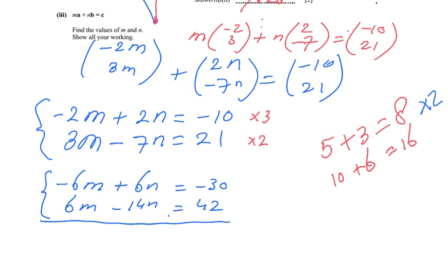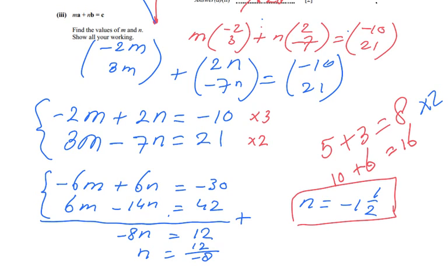Careful now. Do I have to plus or minus it? I have to plus it, because -6M + 6M is going to be zero. Always be careful there. So 6N + (-14N) is going to be -8N, and that equals -30 + 42, which is 12. So N equals 12 divided by -8, which is -1.5. So N is -1.5.